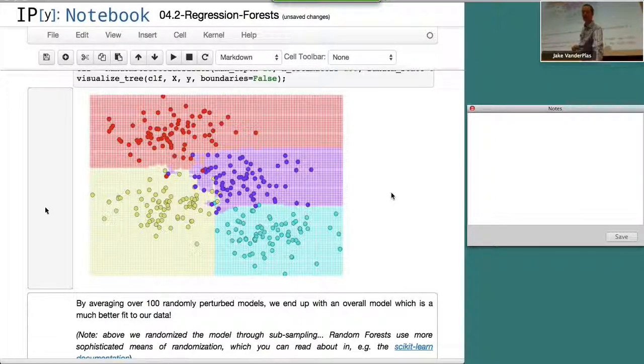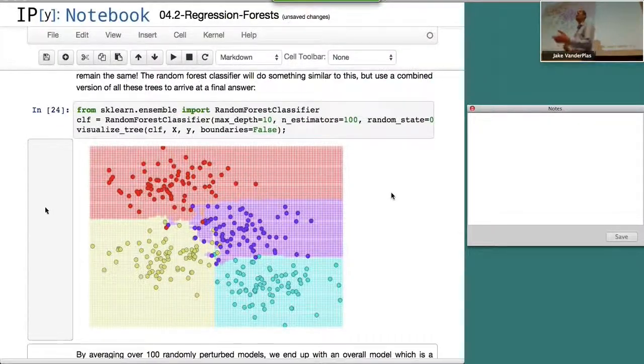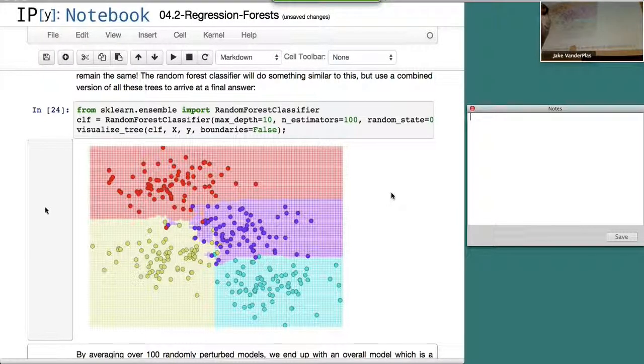So random forests and in general ensemble methods, which is what they call, are basically a way of averaging a whole bunch of estimators in order to prevent this overfitting problem. And one of the reasons random forests are really popular is because decision trees are really, really fast. All we have to do, for each decision tree and every point, we just have to ask maybe ten binary questions about it. Ten yes or no questions. And once that's trained, we can do that incredibly fast.